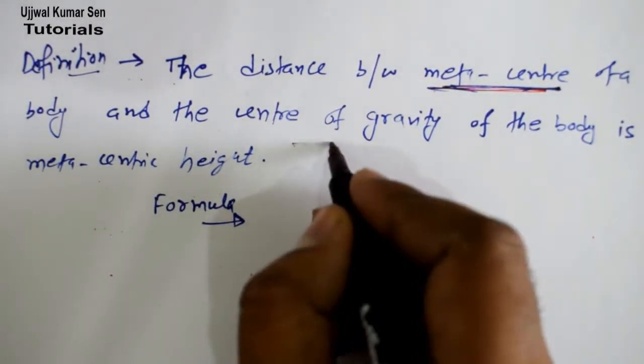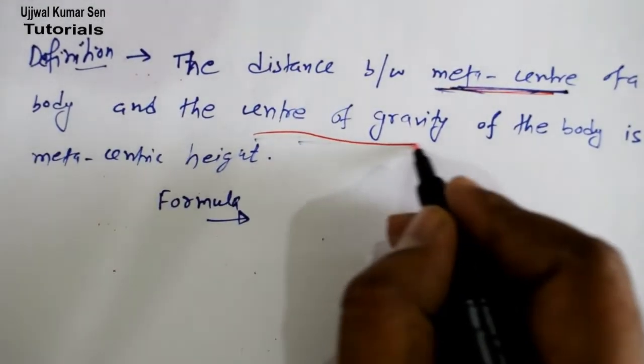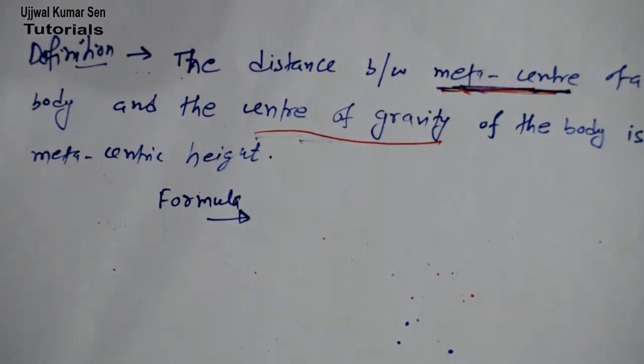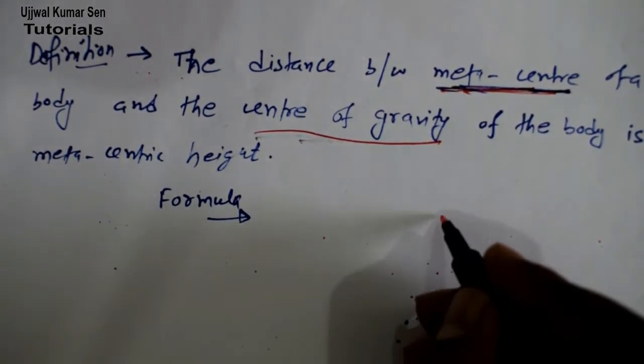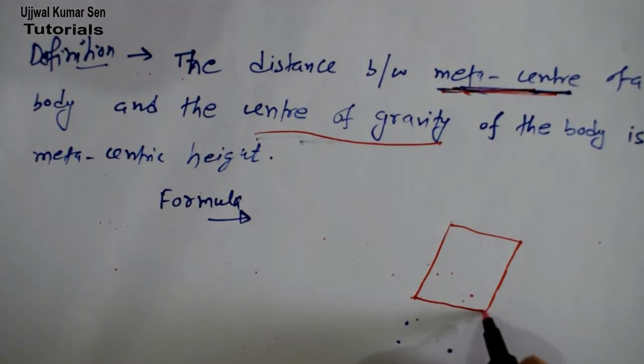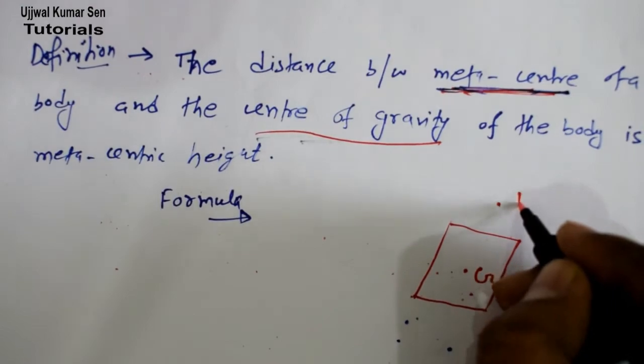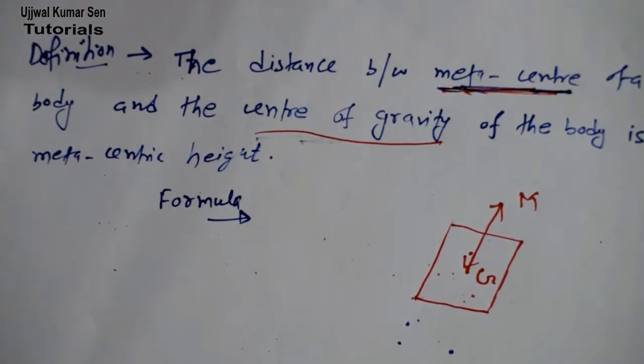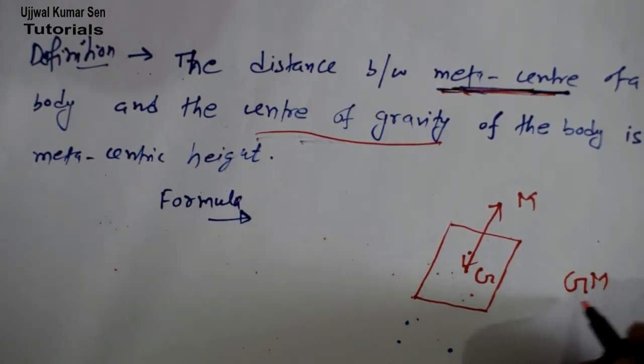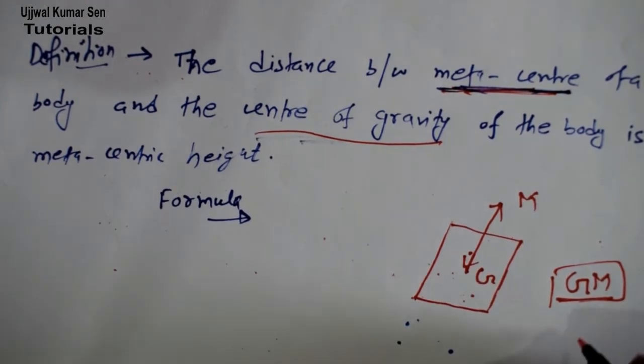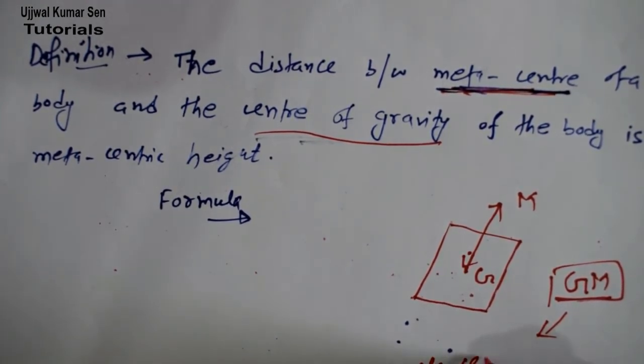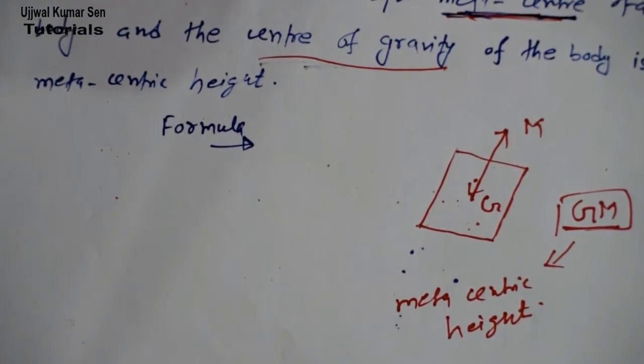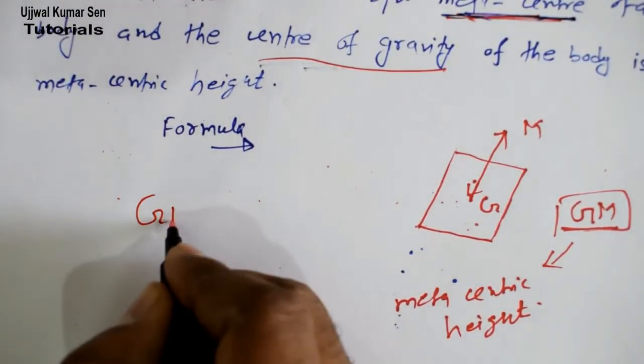Let's understand the formula for metacentric height. The distance between center of gravity and meta center. Let's take an example. Suppose that this is a body and in this body we have a center of gravity here and meta center is here. This distance is known as metacentric height. That's why metacentric height is denoted as GM, which means metacentric height.